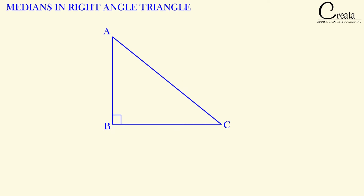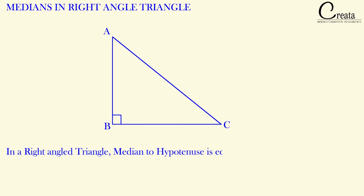In this lecture, we will cover the medians with respect to this right angle triangle. As a special case, let's proceed to the first property. The first property is that in a right angle triangle, the median to the hypotenuse is equal to half of the hypotenuse.